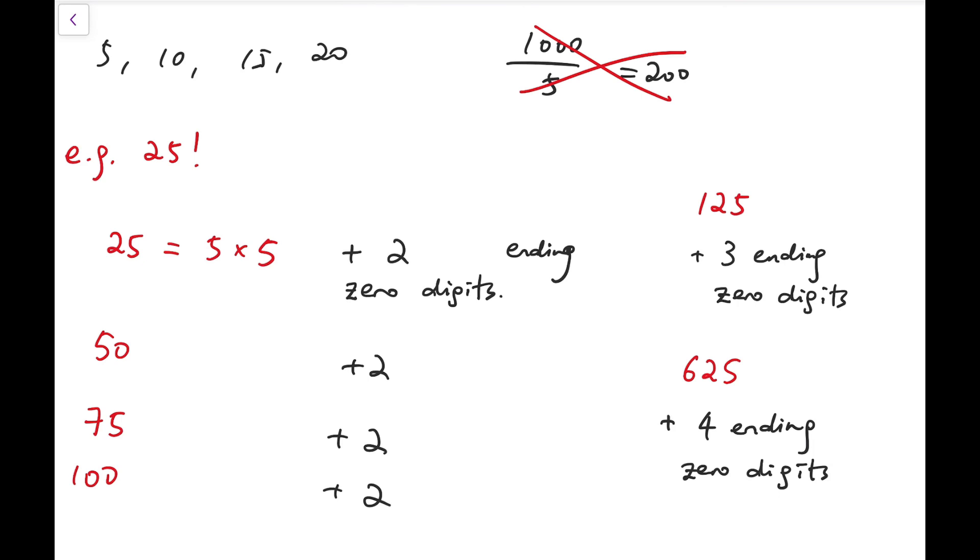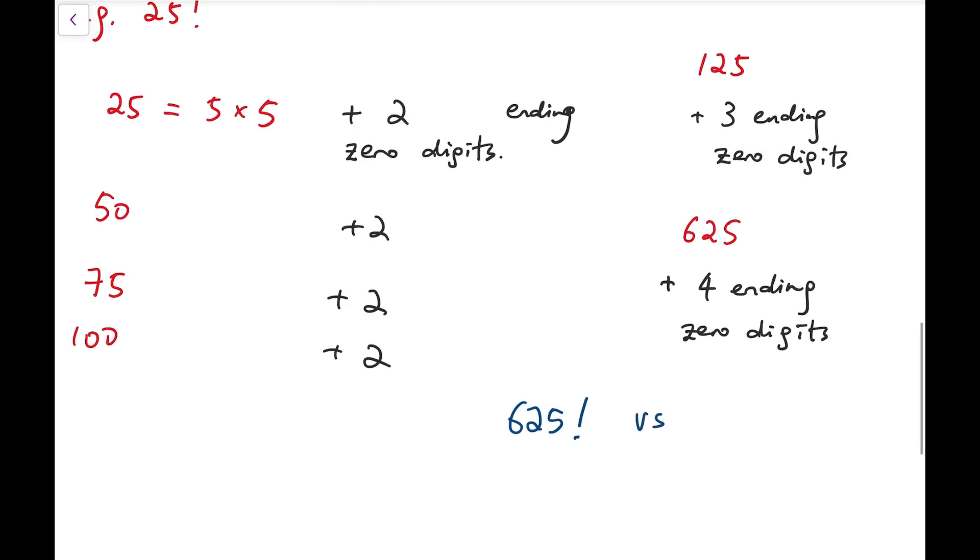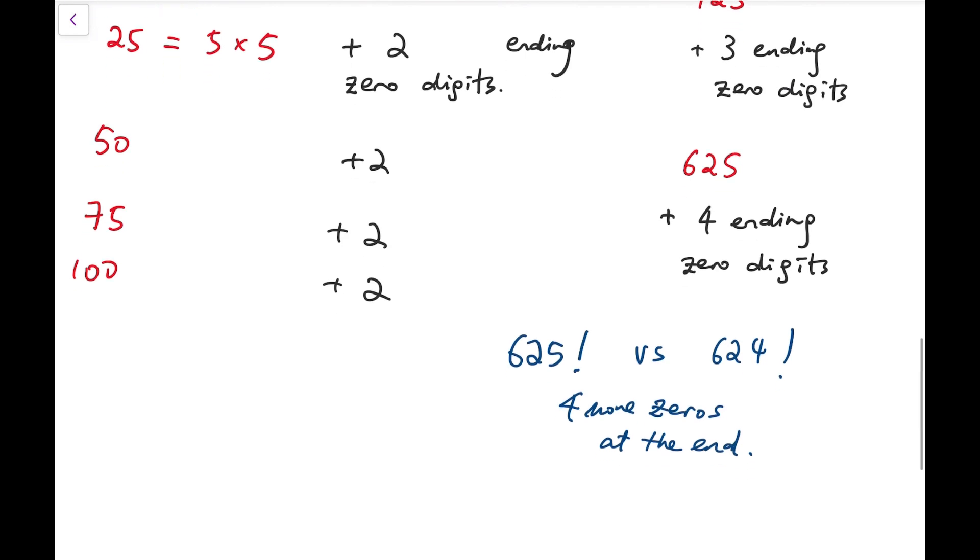The meaning of this statement is that comparing the number of ending zero digits in 625 factorial versus such number in 624 factorial, then it should be 4 more zeros at the end. So from this, we can now do the counting.